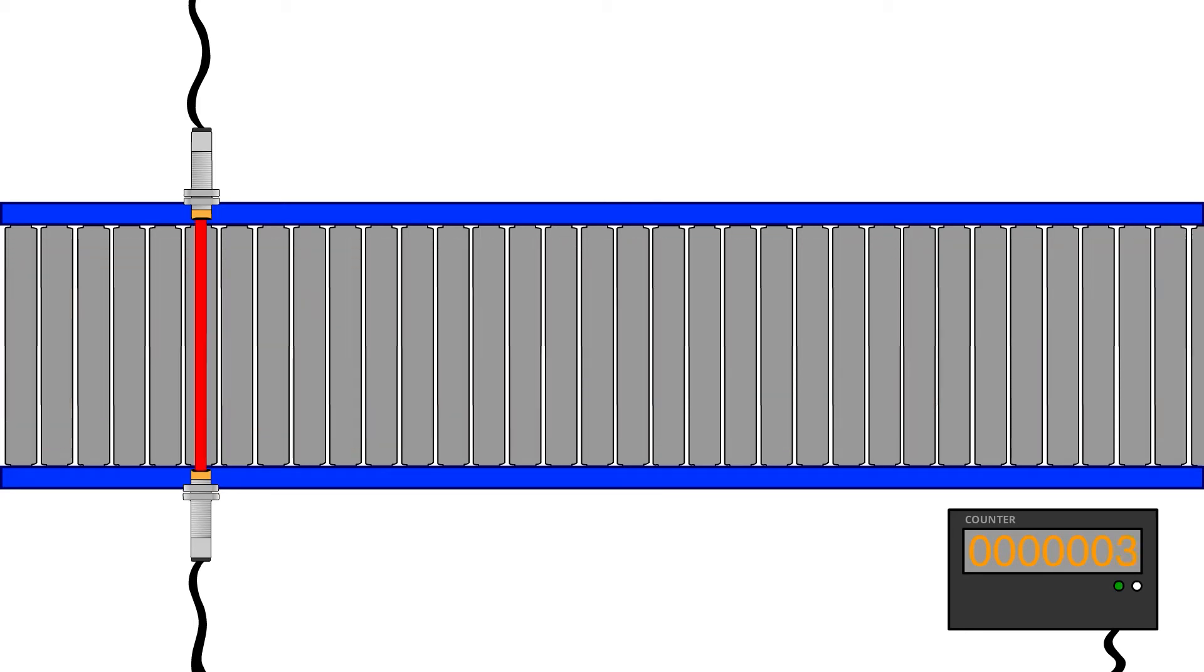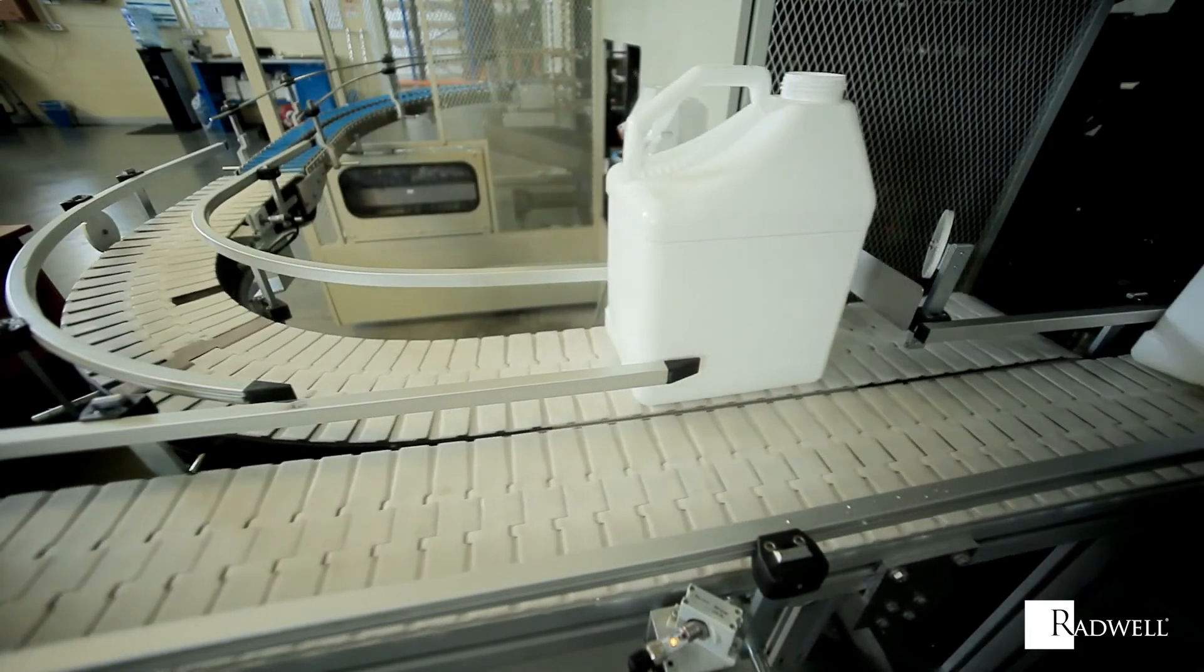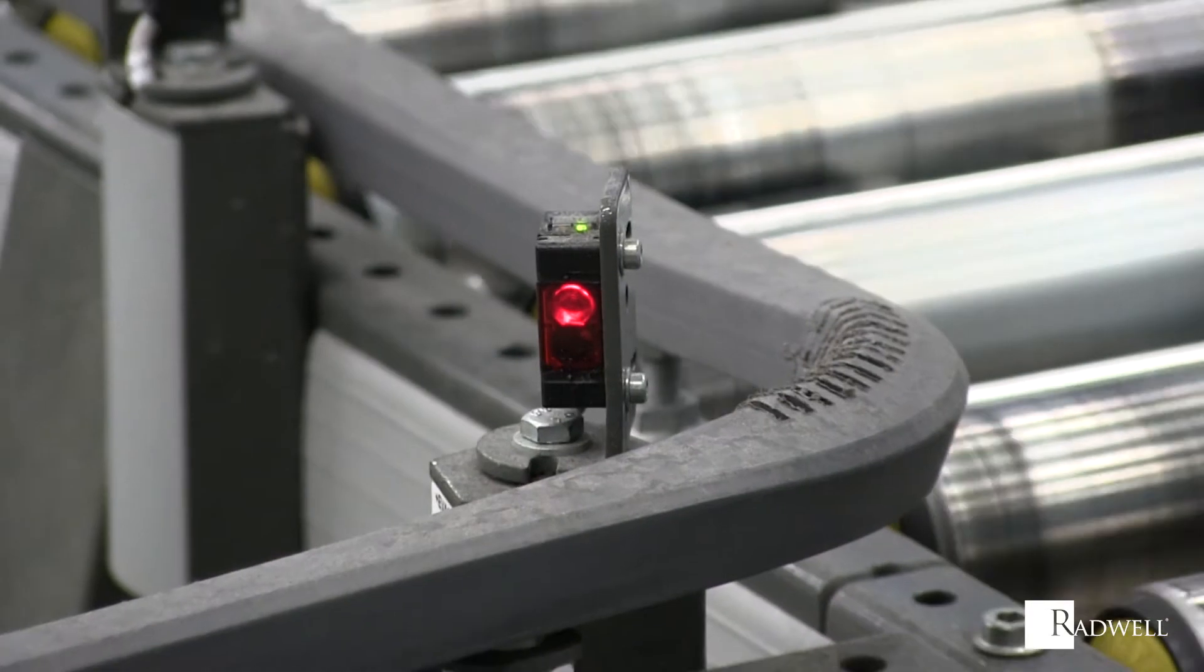Proximity sensors are commonly found on production lines, conveyor systems, and robots. They can also be found on everyday devices like smartphones.